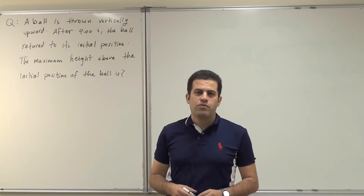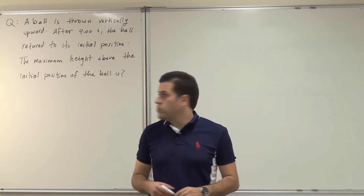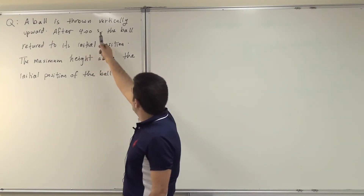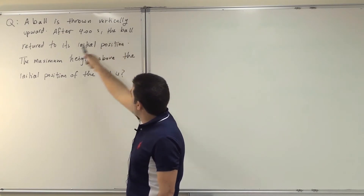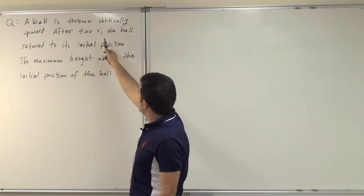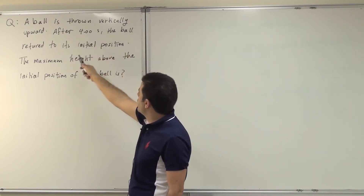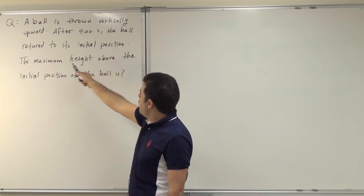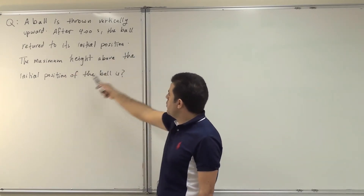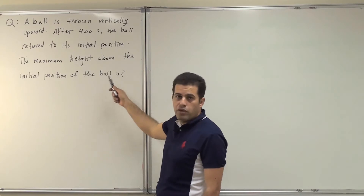As-salamu alaykum. Today we're solving questions from chapter 2. The question reads: a ball is thrown vertically upward. After 4 seconds, the ball returns to its initial position. The maximum height above the initial position of the ball is?